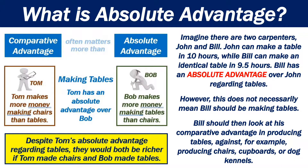Imagine there are two carpenters, John and Bill. John can make a table in 10 hours, while Bill can make an identical table in 9.5 hours. Bill has an absolute advantage over John regarding table making. However, this does not necessarily mean Bill should be making tables. Bill should look at his comparative advantage in producing tables against, for example, producing chairs, cupboards, or dog kennels.